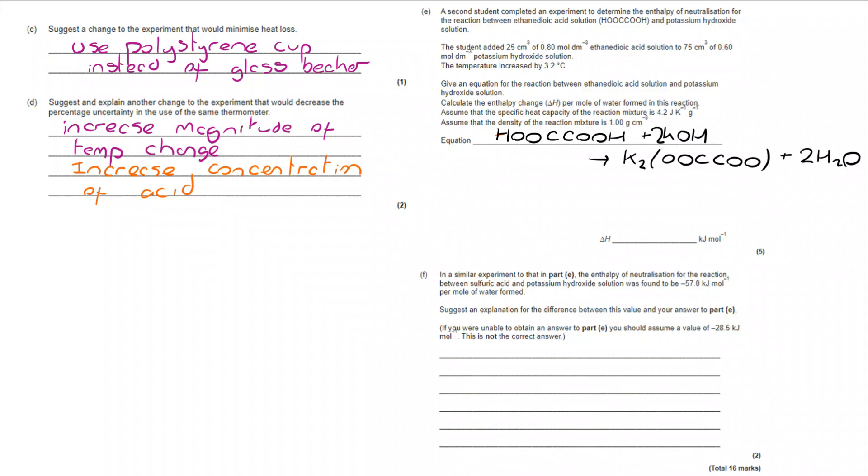From there, we can move on to the actual calculation. And I'm moving down to the bottom left of the screen to do that. We're going to use Q is mc delta T. We have the mass, which is 100. The total volume of the two solutions is 100 cm cubed. And the density, as we're told in the question, is 1. So 100 grams mass of surroundings.